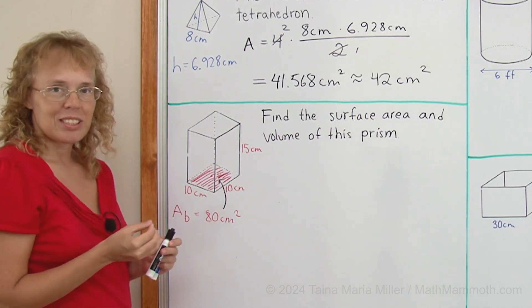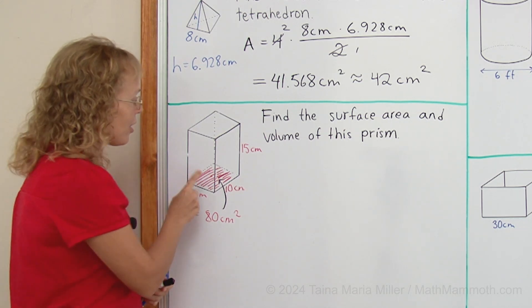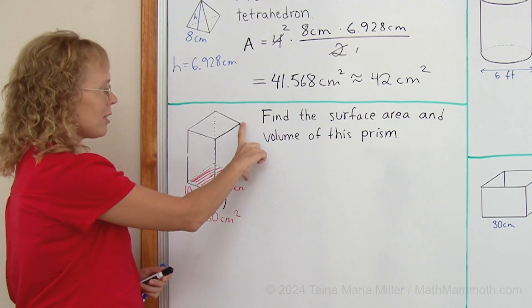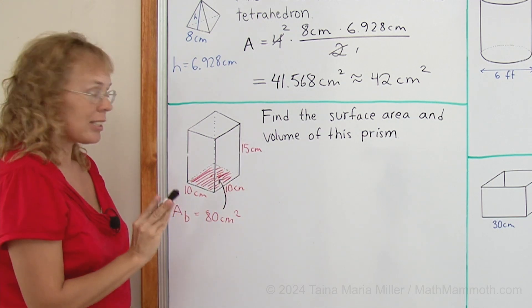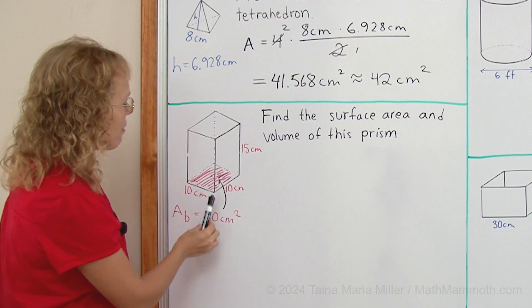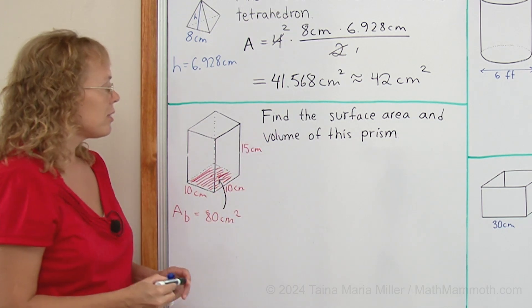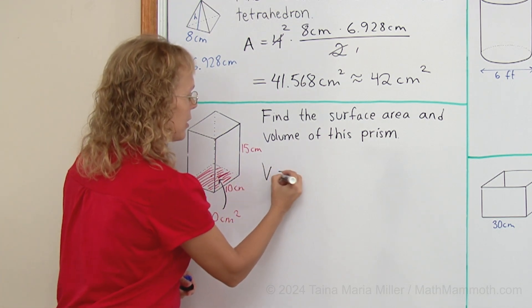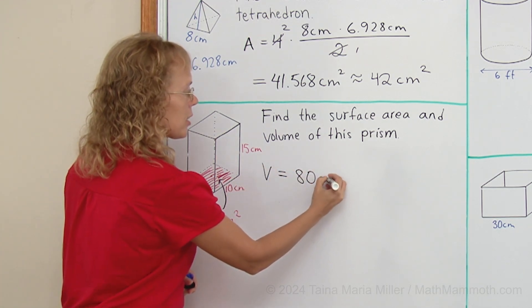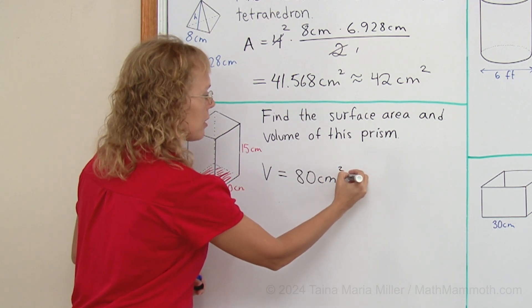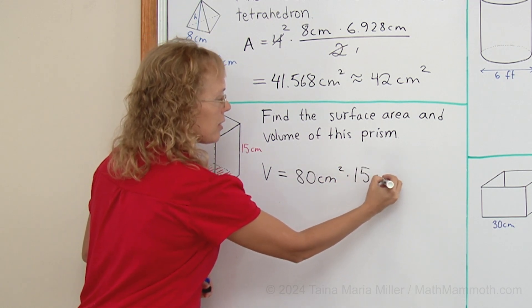Volume for a prism was calculated by multiplying the area of the base times the height. And since both of them are given, we have the area of the base being 80 square centimeters and the height being 15, the volume is pretty easy. All it is is 80 square centimeters times 15 centimeters.